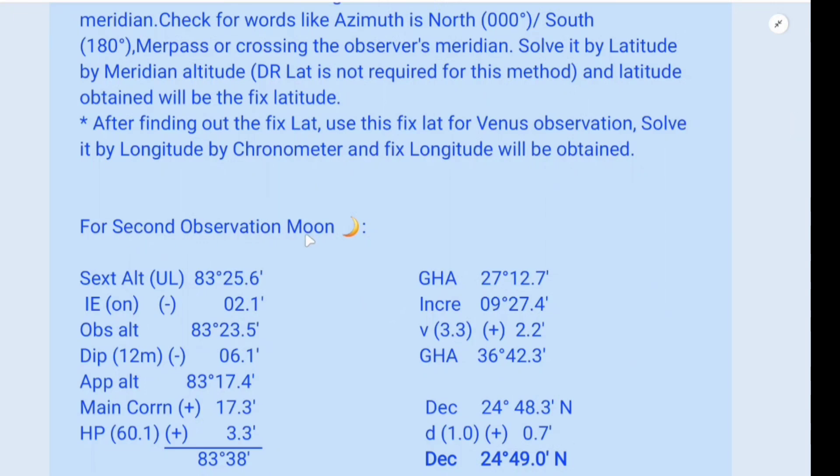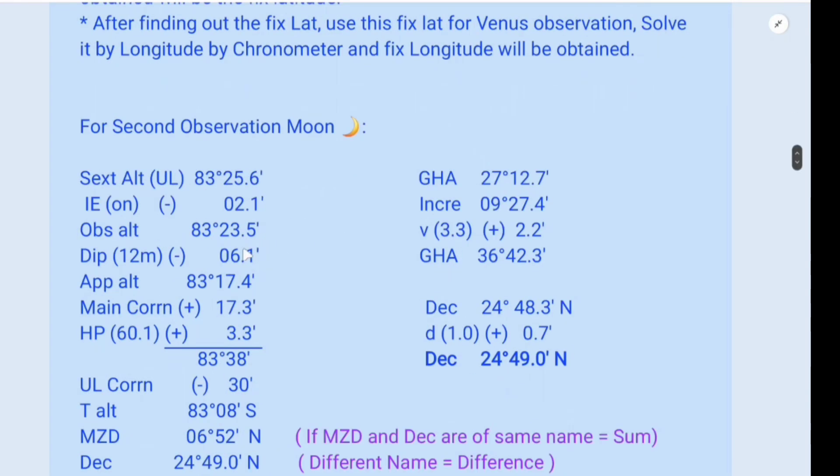So for the second observation, there is Moon. Sextant altitude upper limb is given as 83 degrees 25.6 minutes. Index error on the arc is 2.1 minutes. So if you subtract you get the observed altitude as 83 degrees 23.5 minutes.